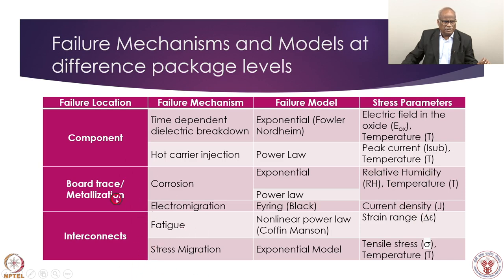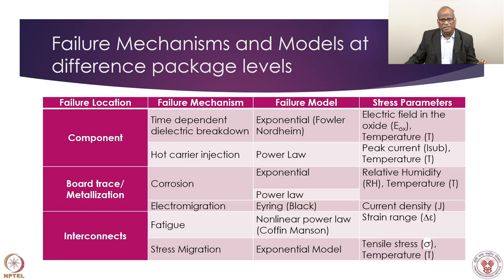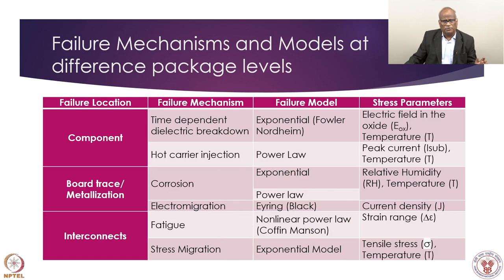For purely interconnects — including solder joints as an interconnect — fatigue and stress migration apply. The very famous Coffin-Manson model and exponential model are used here, with strain range as the key parameter, since we are talking about mechanical strain related to fatigue. Tensile stress and temperature are the stress parameters. The complete design of the package has been done to address these stress parameters — internal or external — and these are the failure models available. In the next few slides we will discuss some important failure mechanisms, especially for electronic components.